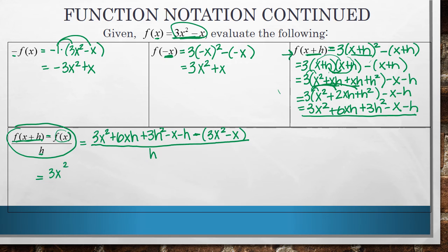So I'll write down 3x squared plus 6xh plus 3h squared minus x minus h minus 3x squared plus x all over h.